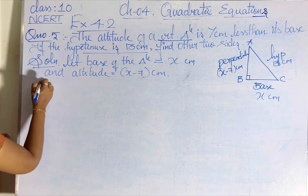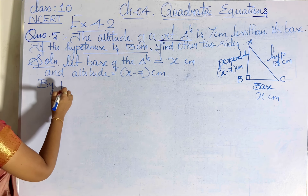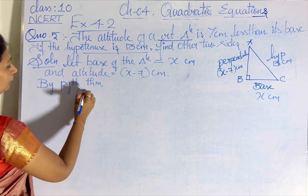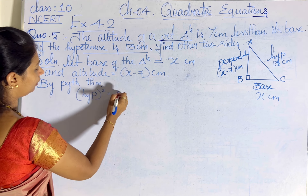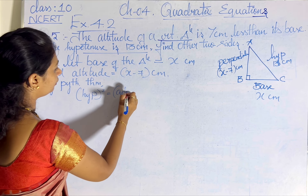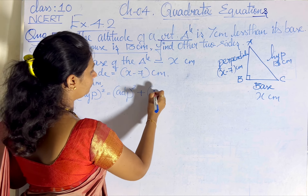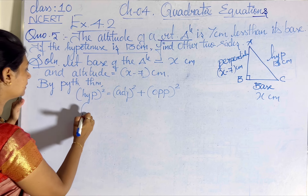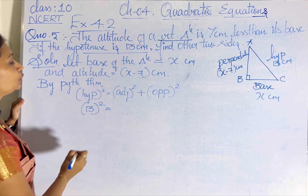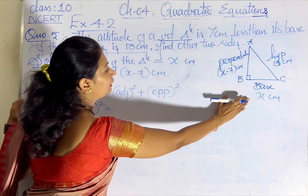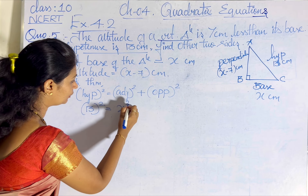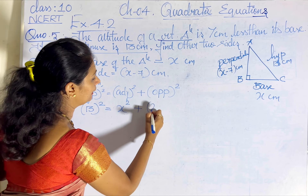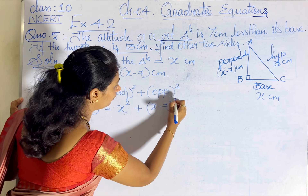We can apply the Pythagoras theorem. By Pythagoras theorem, hypotenuse squared equals adjacent squared plus opposite squared. The given hypotenuse is 13, so 13 squared equals x squared plus (x minus 7) whole squared.